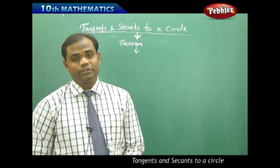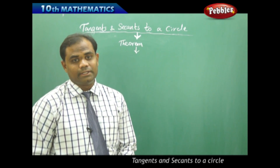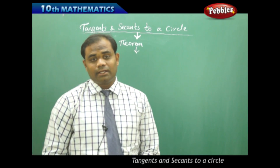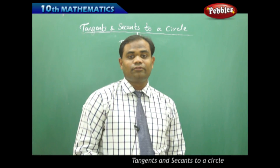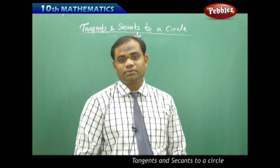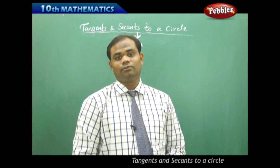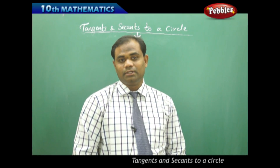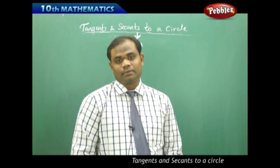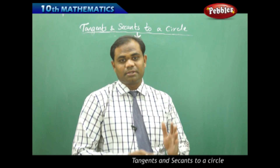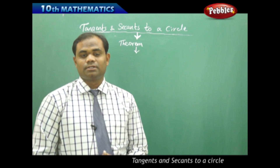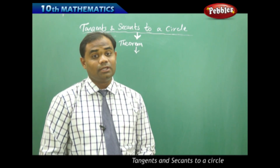Now let's see a theorem which connects the third case of the previous session. The third case says that if P is a point outside the circle, then there are only two tangents which can be drawn from an external point P to the circle with a suitable radius. Since these two tangents can be drawn, the theorem says that the lengths of those tangents will be equal.